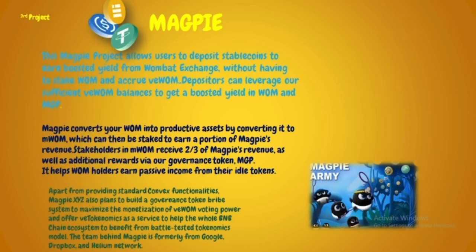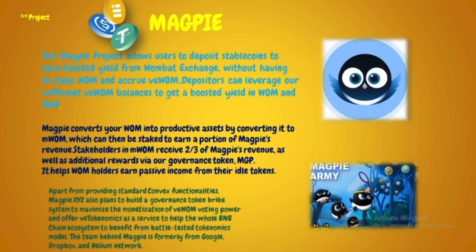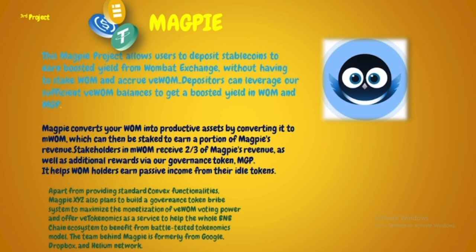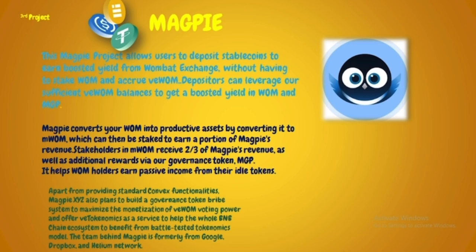Magpie (MGP) allows users to deposit stable coins to earn boosted yield from Wombat Exchange without having to stake WOMB or acquire vWOM. Depositors can leverage Magpie's sufficient vWOM balance to get boosted yield. Magpie can convert your WOMB into productive assets by converting it to mWOM, which can then be staked to earn a portion of Magpie's revenues. Stakers of mWOM receive two-thirds of Magpie's revenue as well as additional rewards in the governance token MGP. Magpie also plans to build a governance token bribe system to maximize vWOM voting power and offer vote tokenomics as a service. The team behind Magpie comes from Google, Dropbox, and Helium Network.